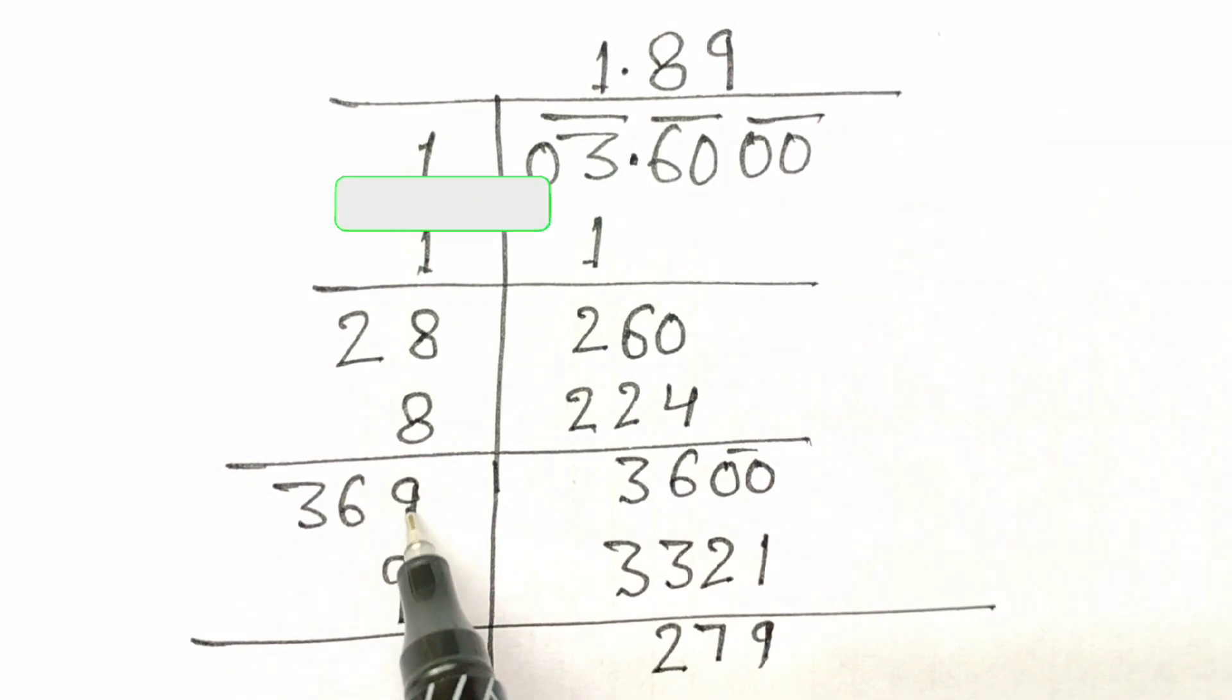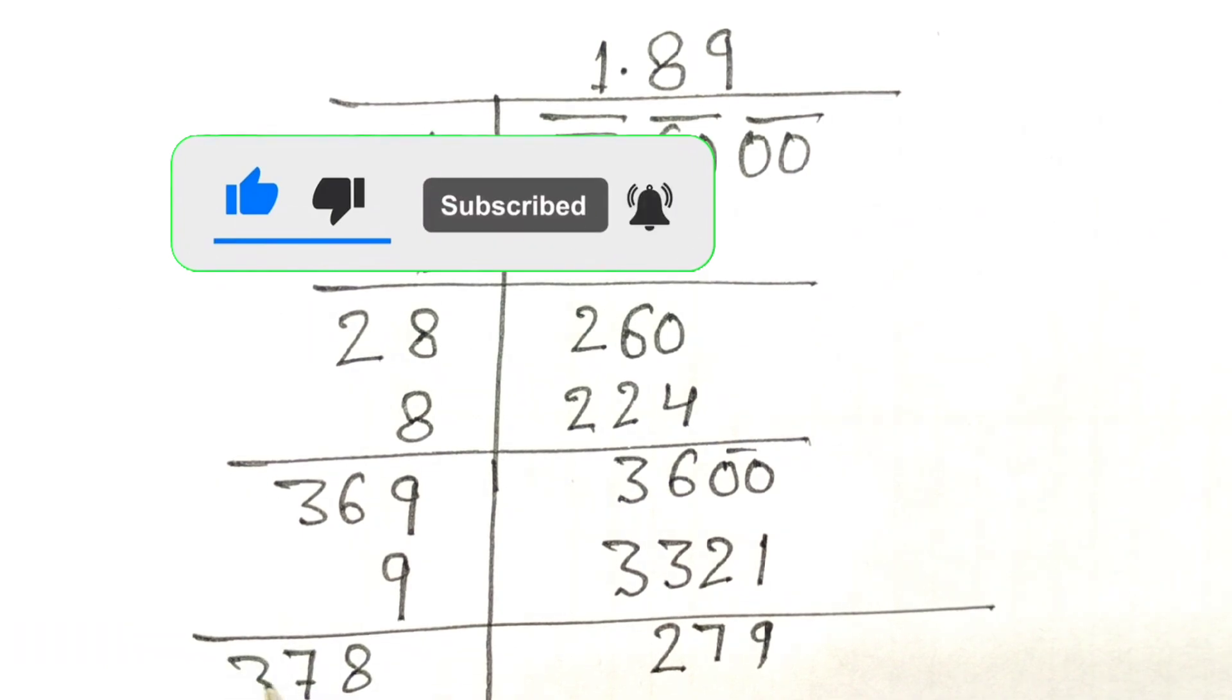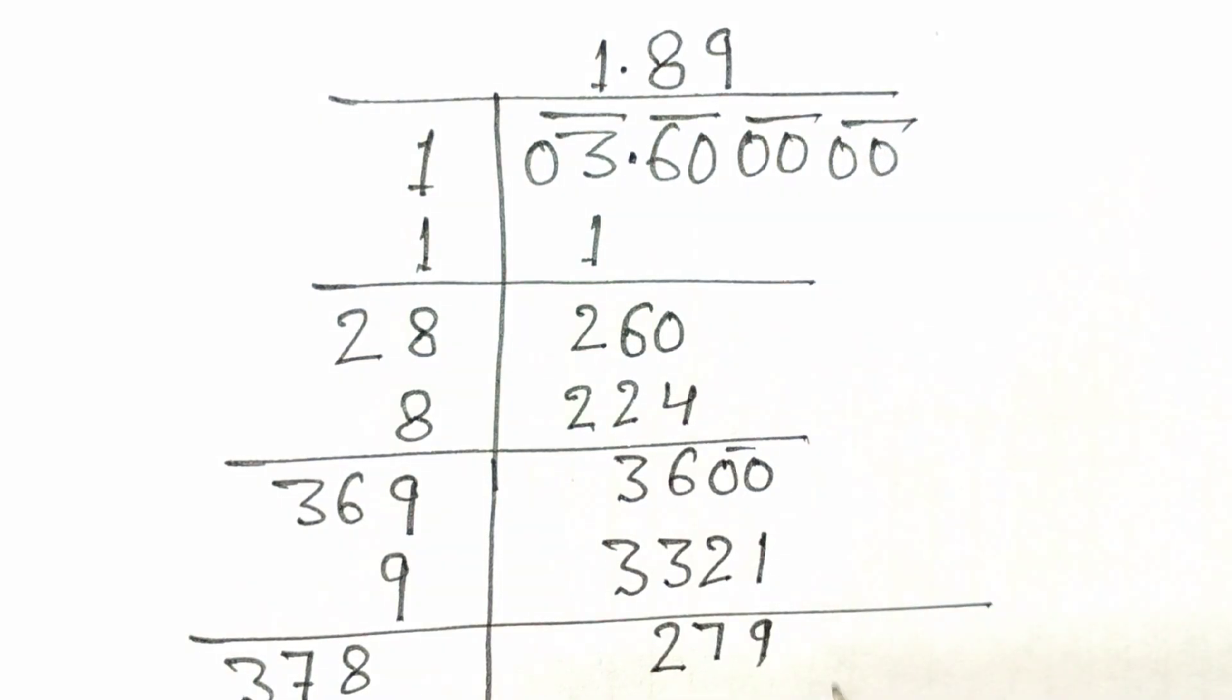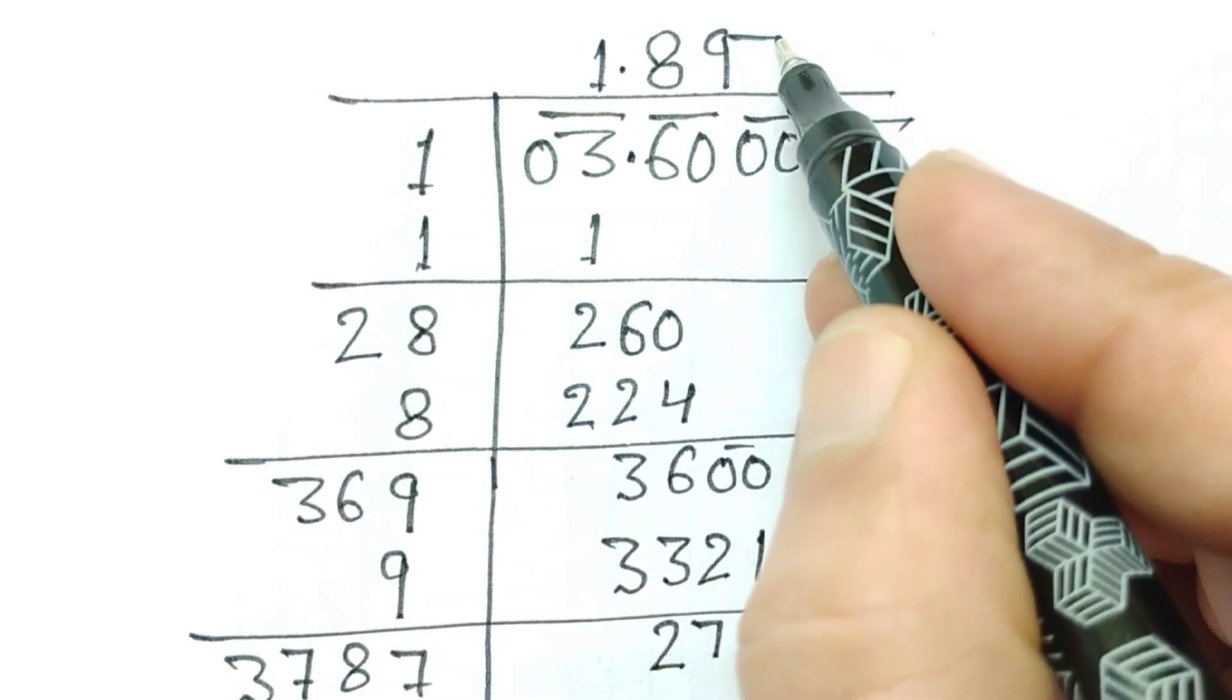And here, 9 plus 9, 18, 7, 3. Again, 0 in pair. Here, we will write down here. We will write down here. Then, 7 times division. Here 7.